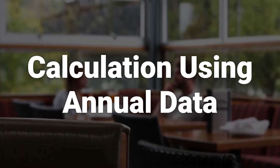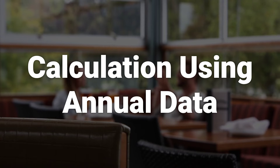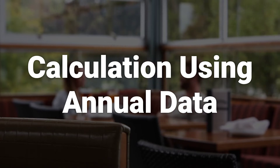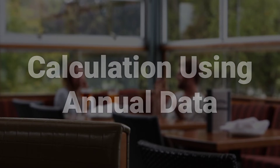Calculating the annualized performance of an investment or index using yearly data involves the principal investment, gains or losses, the number of years, and the annualized performance rate. The generalized formula takes compound interest into account over time.